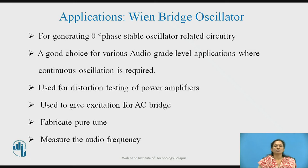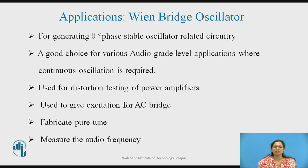Applications of the Wien Bridge Oscillator: since it provides 0-degree phase shift through the bridge circuit, it is used for generating stable oscillations. It is very good for audio applications where stability of frequency and amplitude is obtained through the two stages of amplifier and the bridge circuit. It is used for power amplifiers, for excitation of AC bridges, and it is very useful for fabricating pure tones, as it is a special type of audio oscillator circuit. It is also used to measure the audio frequency of a signal.